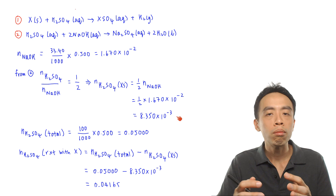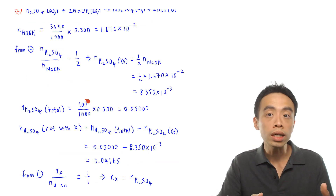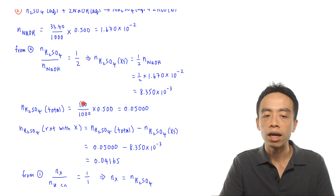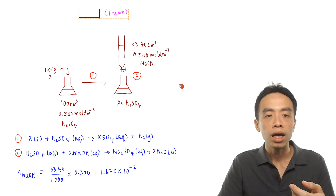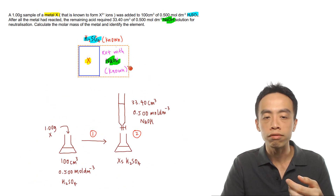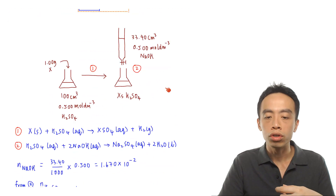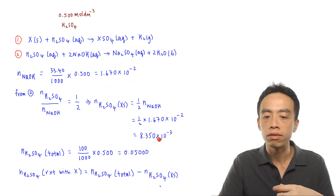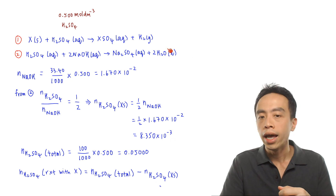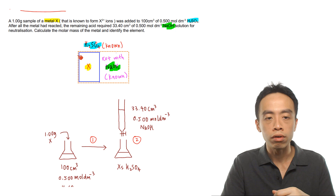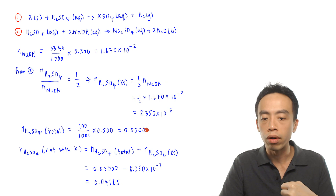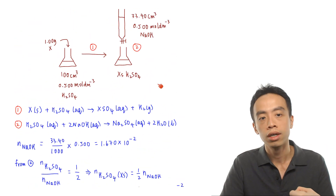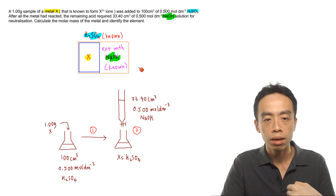Next, we determine how much H₂SO₄ reacted with X. The total moles of H₂SO₄ added = 100 ÷ 1000 × 0.5 = 0.05 mol. Referring back to the diagram, we have the moles of H₂SO₄ reacting with NaOH (8.350 × 10⁻³) and the total moles of H₂SO₄ (0.05), so the difference gives us the moles of H₂SO₄ that reacted with X.